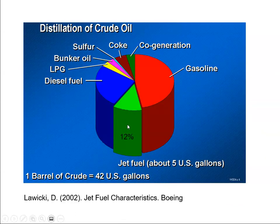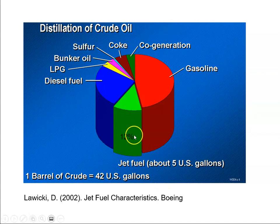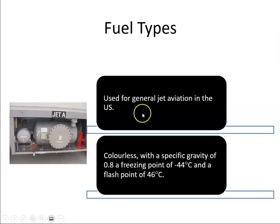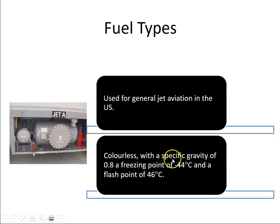Of the crude oil that is distilled, about 12% of it becomes jet fuel. Jet A is used for general jet aviation in the US. It is colourless, has a specific gravity of 0.8, a freezing point of minus 44 degrees Celsius, and a flash point of 46 degrees Celsius.